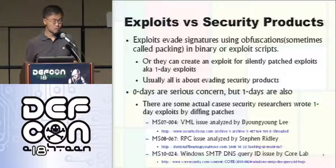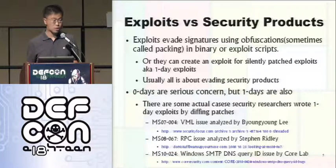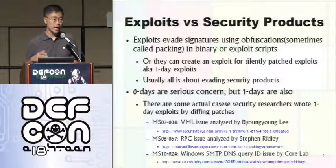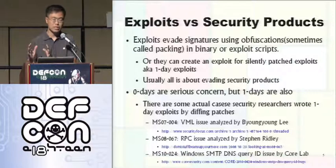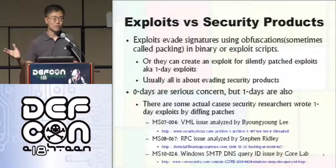I gathered some real examples. The first one is MS07-004, a VML issue. The patches were out, but nobody wrote any exploits because they didn't have information about the vulnerability. The vendor just released the patch and an advisory saying they patched something wrong inside the VML module — and that was it.